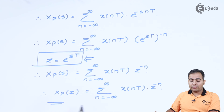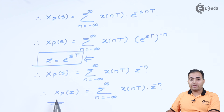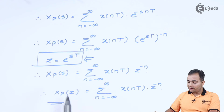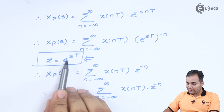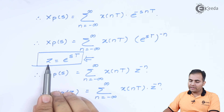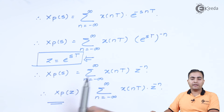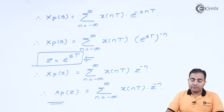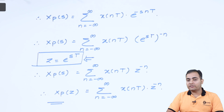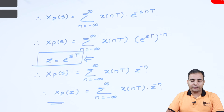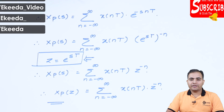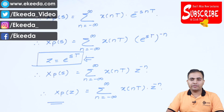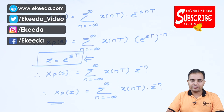Whenever we want to convert any continuous time signal or any Laplace transform signal into the Z domain, we will always replace e to the power sT by z, and you will get the answer in the Z domain. That's all for now; we will study the next topic in the next video. Stay tuned to Ikeda and subscribe for further videos. Thank you so much.